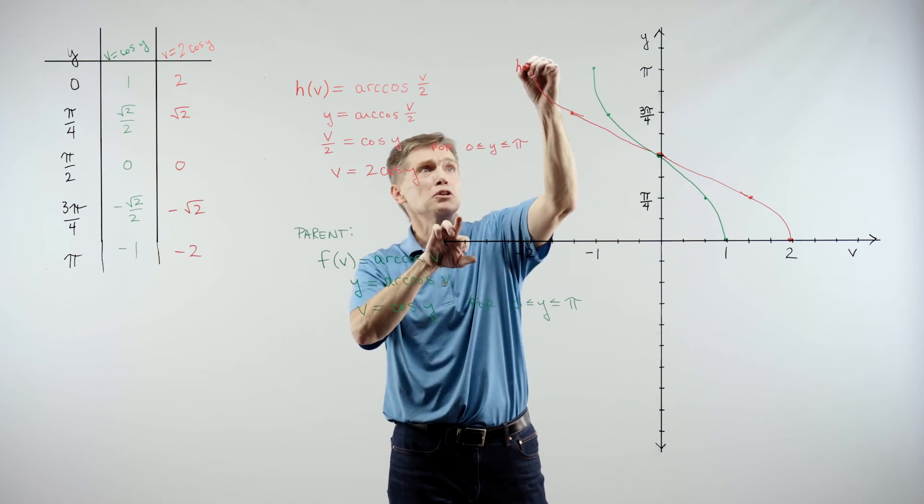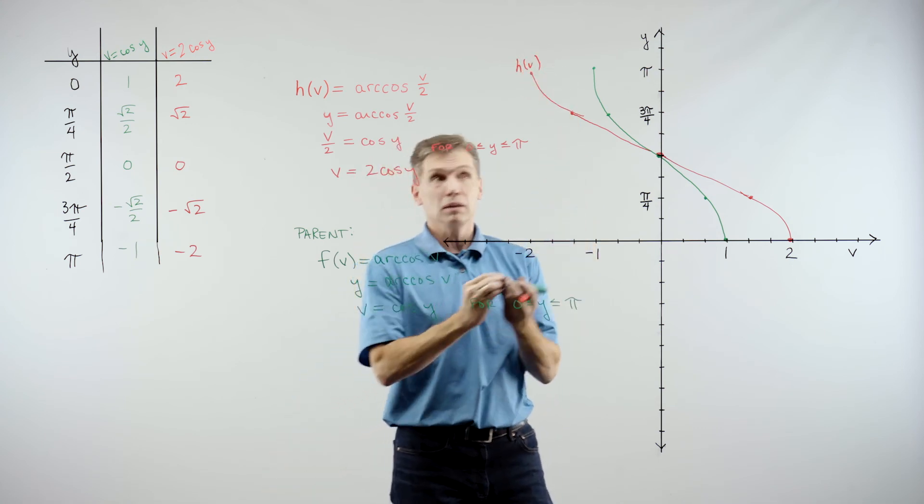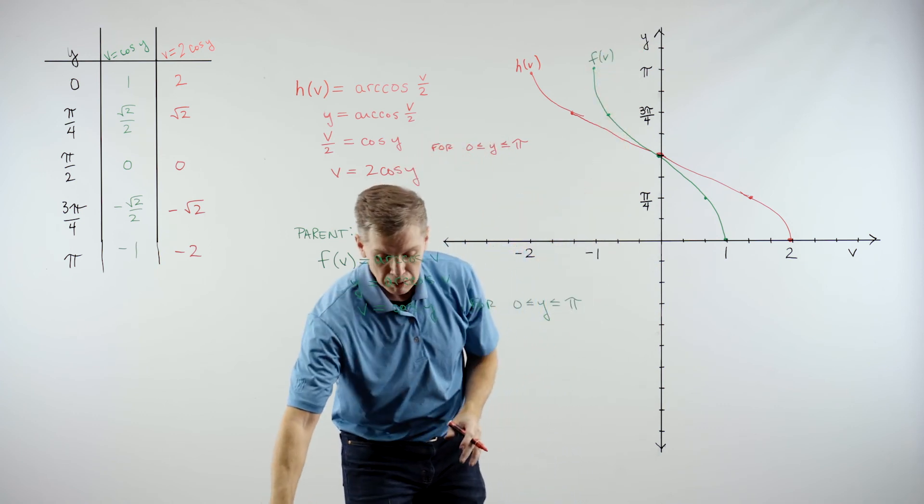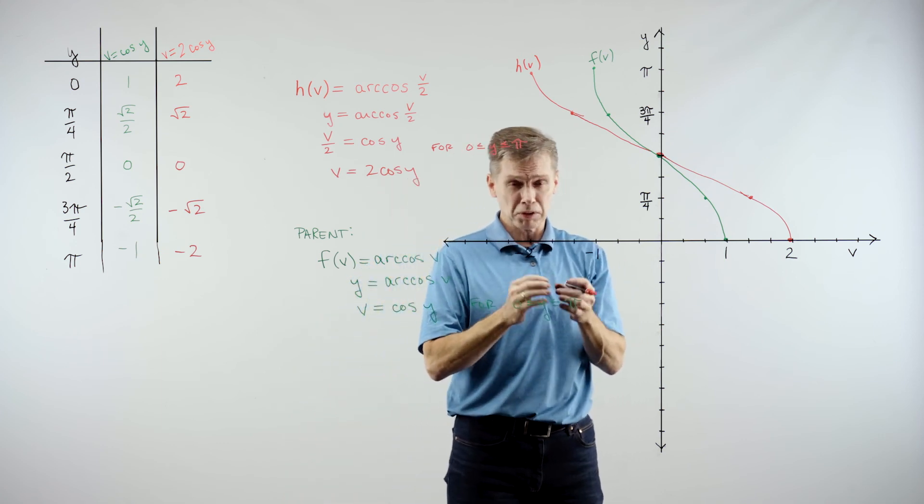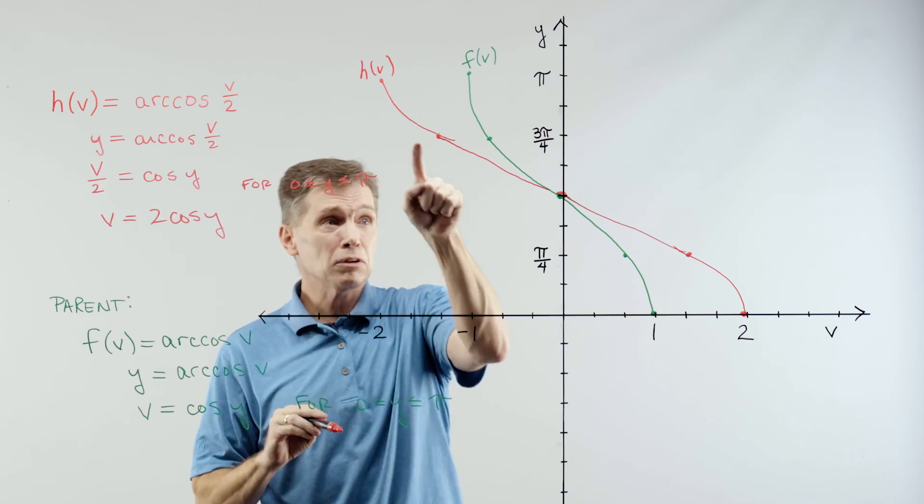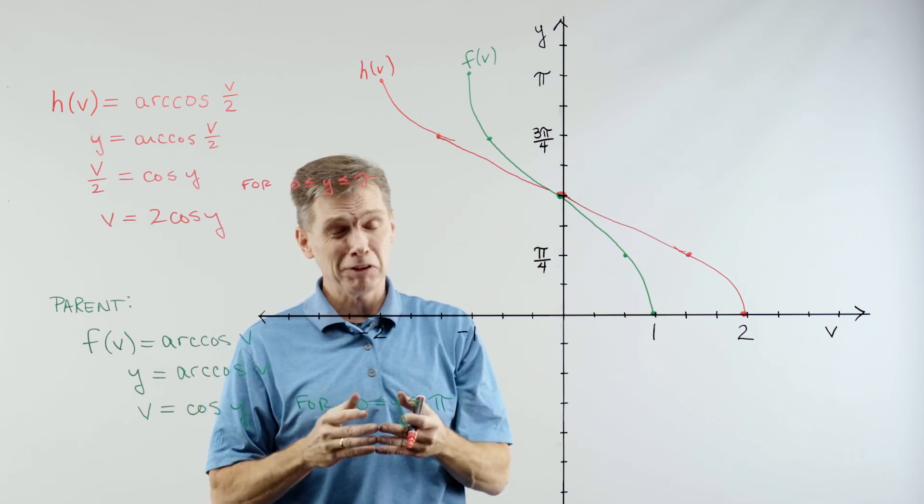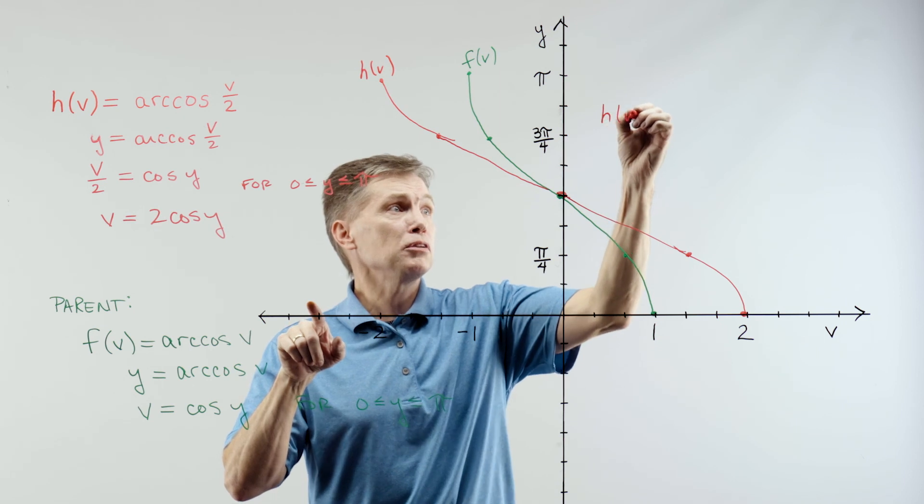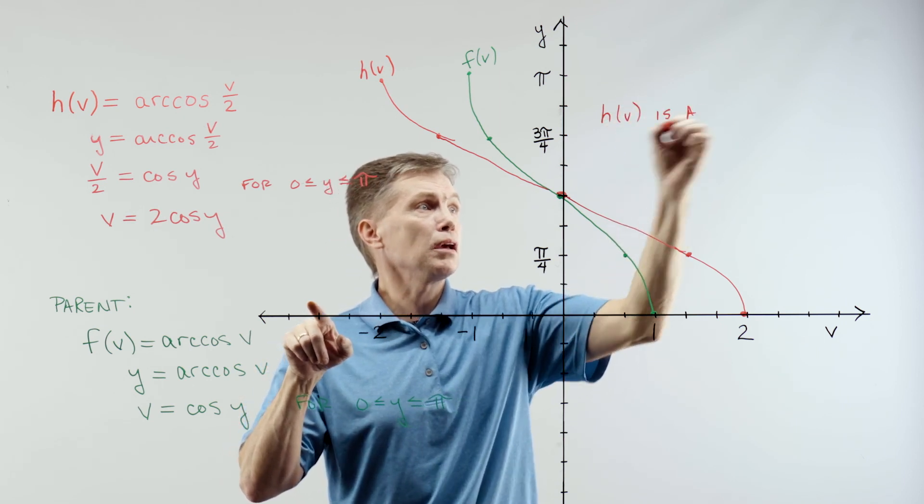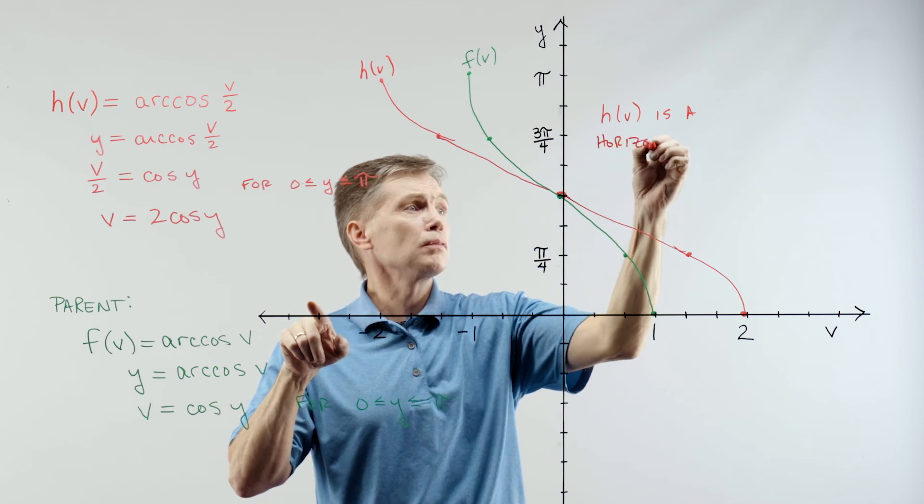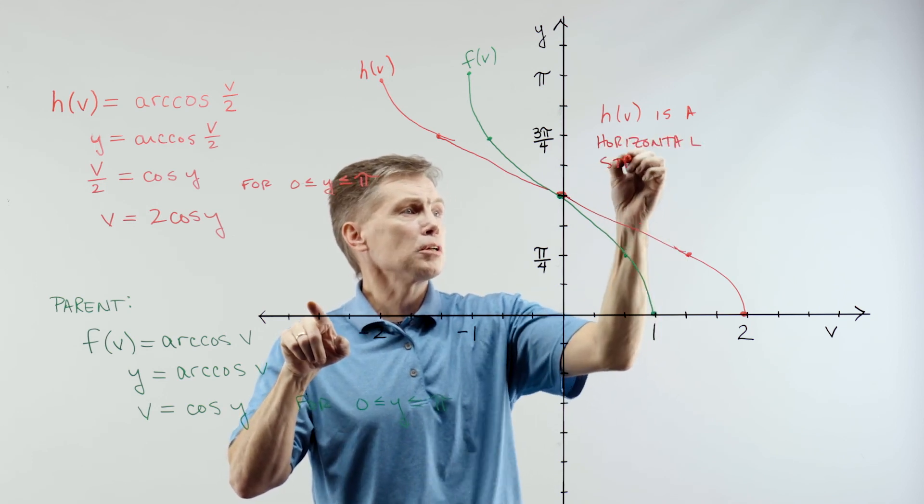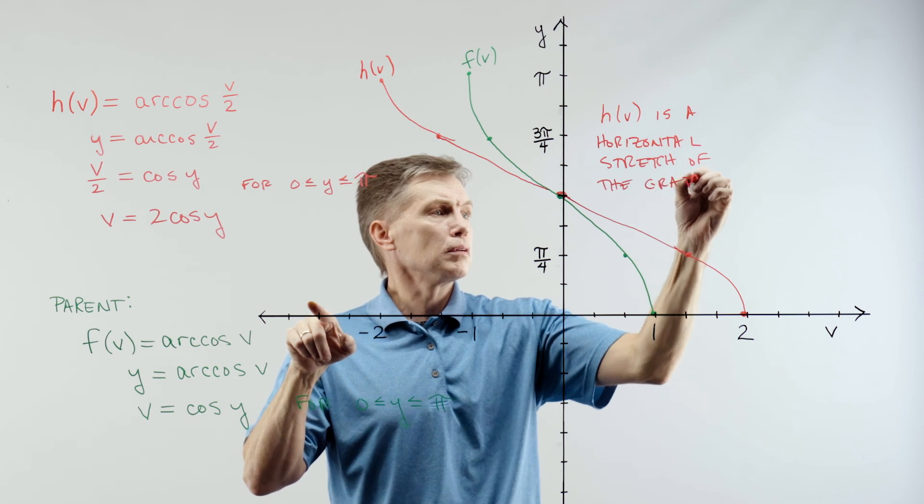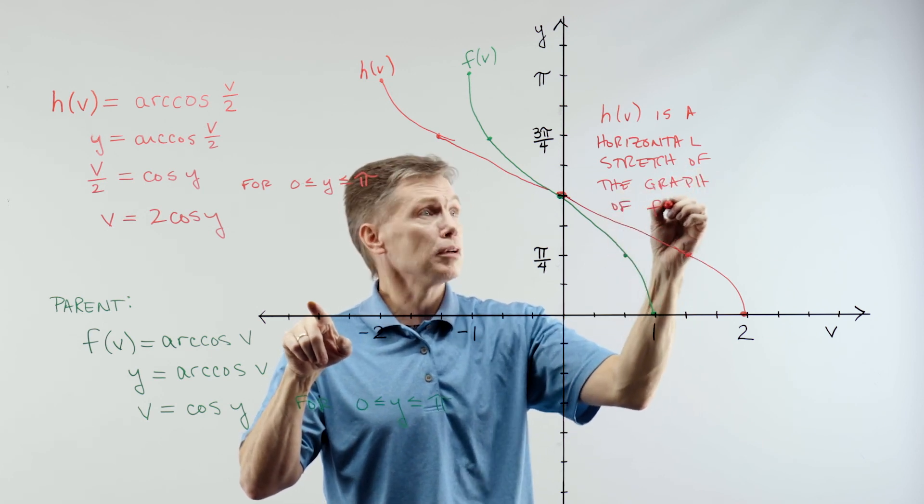Okay. So this one was my h of v, and this green for me was the f of v. Which I'd like to get up there again, the labels even, because the final thing they asked for in this problem was to compare. So this second graph that I drew in red, how does it compare to the graph of its parent function? I hope you can see basically the same shape, except what we have is that h of v is a horizontal stretch of the graph of f of v.